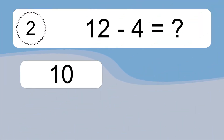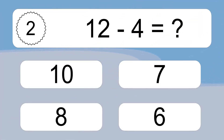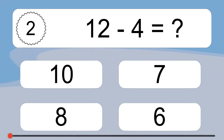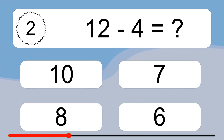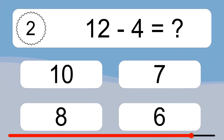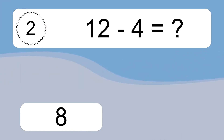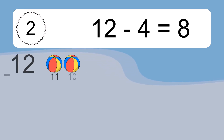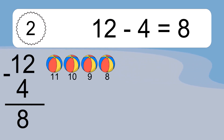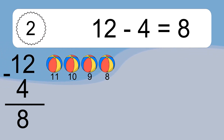12 minus 4 equals what? 12 minus 4 equals 8. Let's count it. 11, 10, 9, 8.